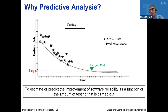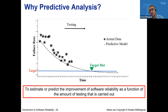We started by talking about identifying your reliability objective, operational profiles, doing testing, collecting data, and now we're going to continue the process and talk about predictive analysis. That's not only for software reliability — it's also for everything in our lives nowadays.